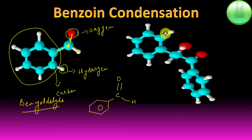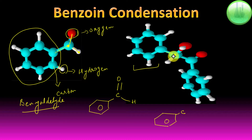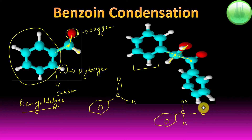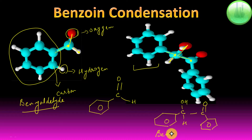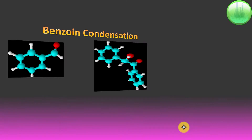Now let's look at the product. There's a benzene ring, to which is attached a carbon atom. That carbon is attached to an H, and to an OH. It is attached to another carbon, which has a double bond to oxygen and is attached to another benzene ring. This compound is known as benzoin, and this is what we're going to form in this reaction — benzaldehyde forming benzoin. We'll see how this happens and look at the mechanism.